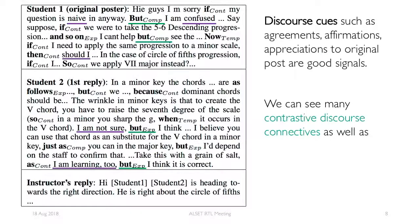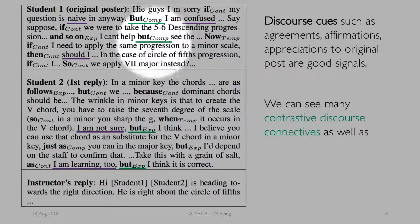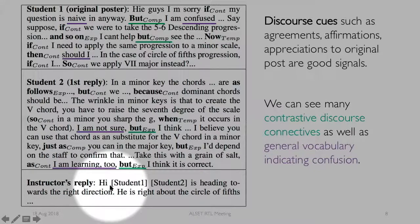We have found that discourse cues such as agreements, affirmations, and appreciations are also really good signals for intervention. On the left side of the screen, you can see a screenshot of posts in a discussion thread. The original poster has indicated certain words like naive, confused, and should I. These by themselves don't indicate that the thread needs to be intervened on, but when taken into consideration with discourse connectives like but, this indicates a very strong signal to our discourse model that an intervention needs to take place. These contrasted discourse cues, along with general vocabulary indicating confusion, can indicate that instructor intervention is needed. In fact, in this example the instructor does eventually intervene, making it a positive example.